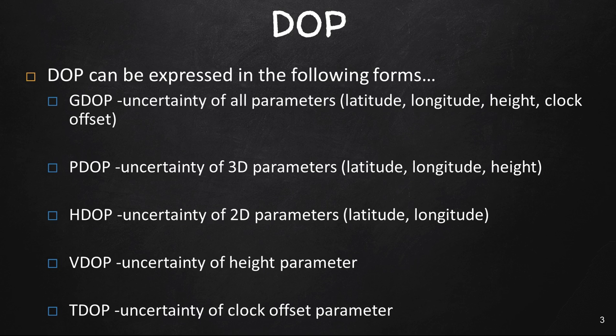VDOP, which is your vertical dilution of precision, is uncertainty of the height parameter. TDOP is the uncertainty of the clock, that's the time offset. But the biggest ones that we're going to be worrying about are the GDOP, PDOP, and the HDOP, and we'll talk about those more coming up.